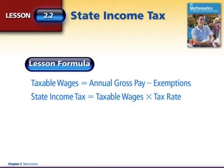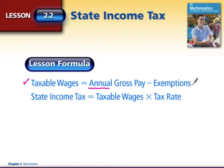Let's look at our formulas for today. We're going to find the taxable wage just like we did with federal income tax, but we're looking at the annual gross pay this time instead of just a weekly or bi-weekly paycheck. We're going to subtract our exemptions that are allowed. Every state could calculate this differently — we're going to use a generic $2,000 to represent our exemptions, and you'll see that on the next screen. Then we're going to calculate our state income tax.